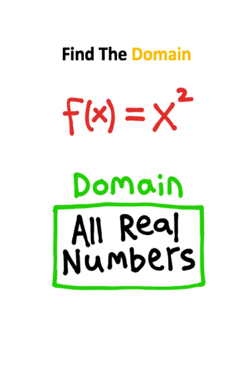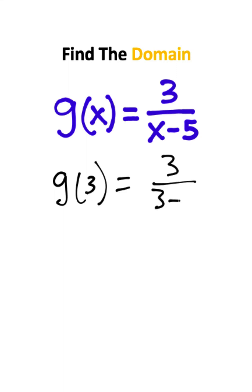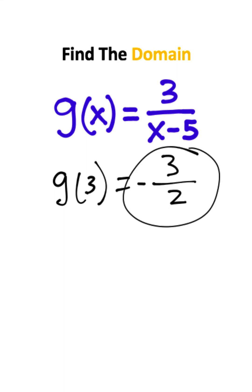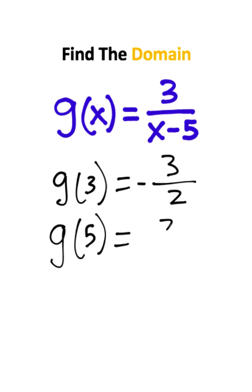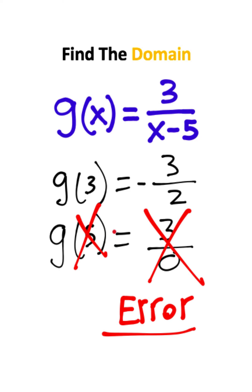But let's change things up and try a function like this. Let's try plugging in a few inputs. I'm going to try g of 3: we have 3 over 3 minus 5, which means we'll have negative 3 over 2. Now let's try plugging in a 5. We'll have 3 over 5 minus 5, which is the same thing as 3 over 0. But this is a problem — you cannot divide by 0. This is a fundamental math rule, so this input is not allowed.